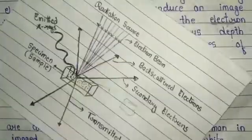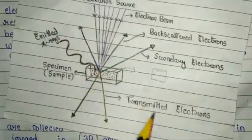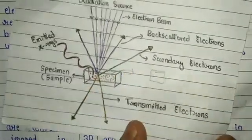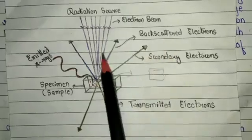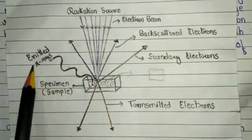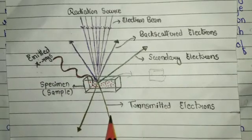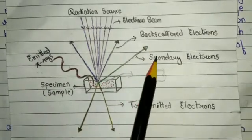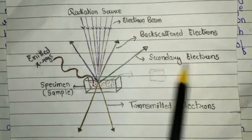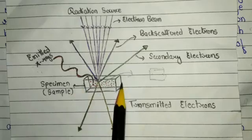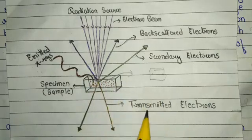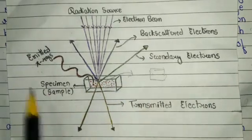From the diagram we understand the principle well: when the electron beam (radiation source) is bombarded onto the specimen or sample, three types of signals are produced — secondary electrons, backscattered electrons, emitted X-rays, and also transmitted electrons. Transmitted electrons are studied in the next video on transmission electron microscopes. So the three key signals for SEM are secondary electrons, backscattered electrons, and emitted X-rays.